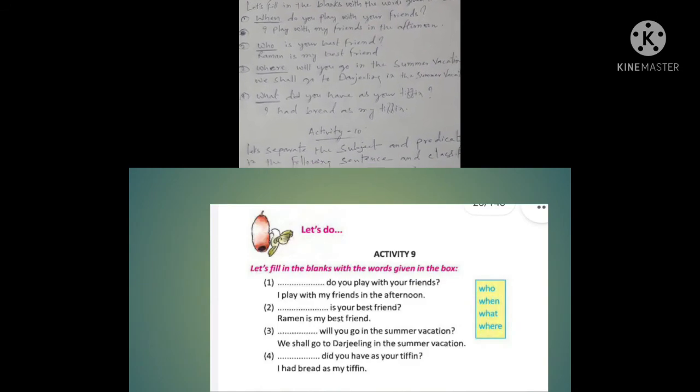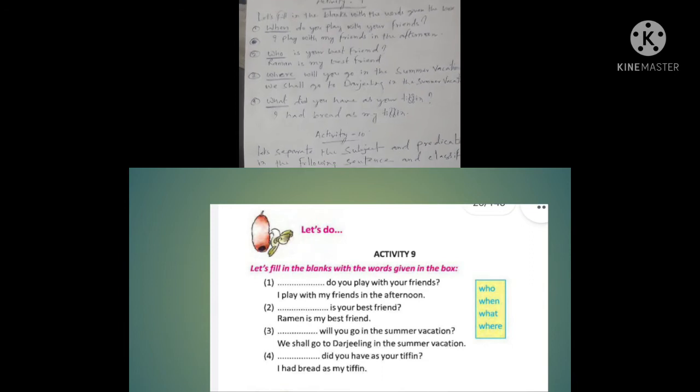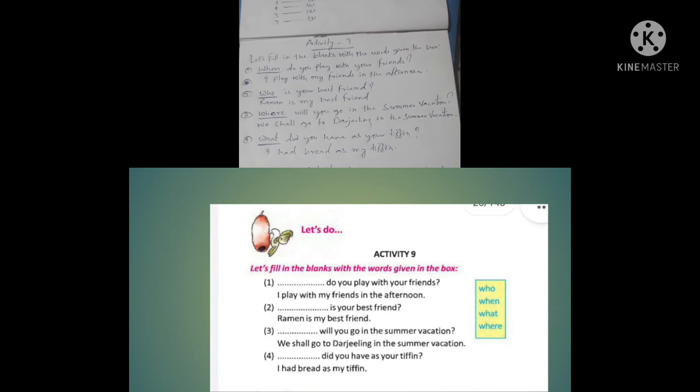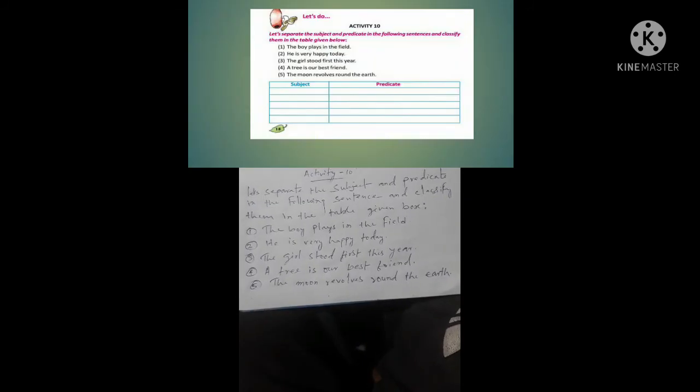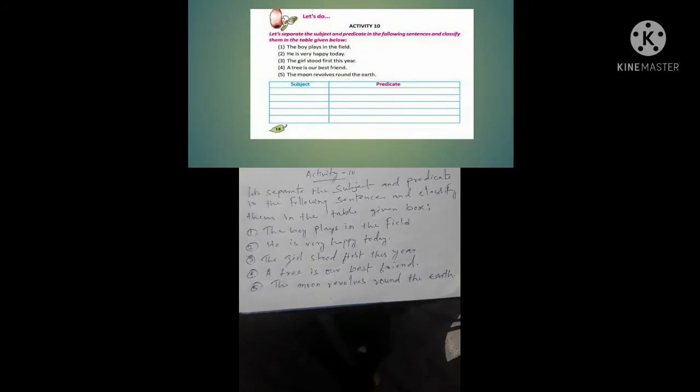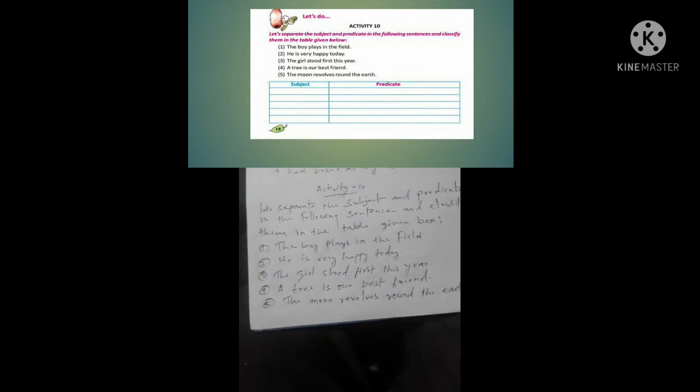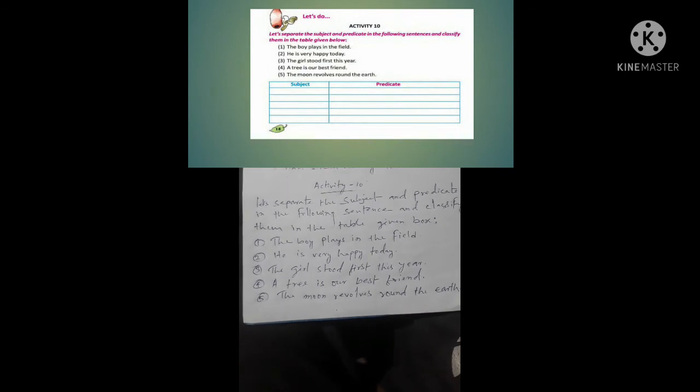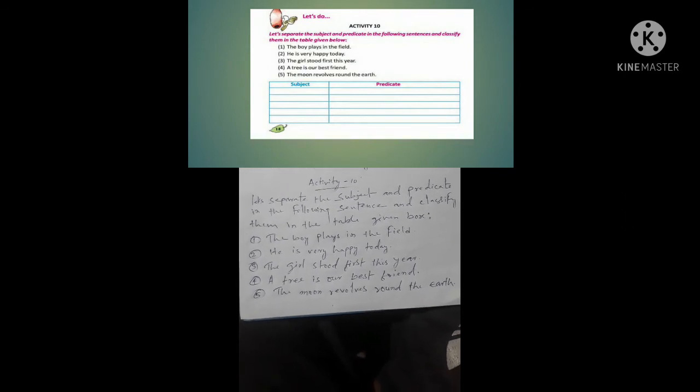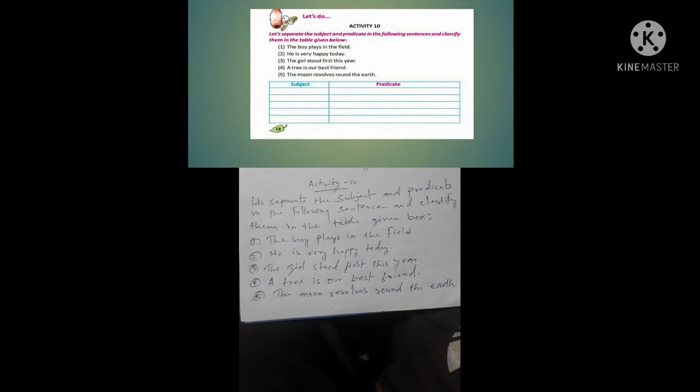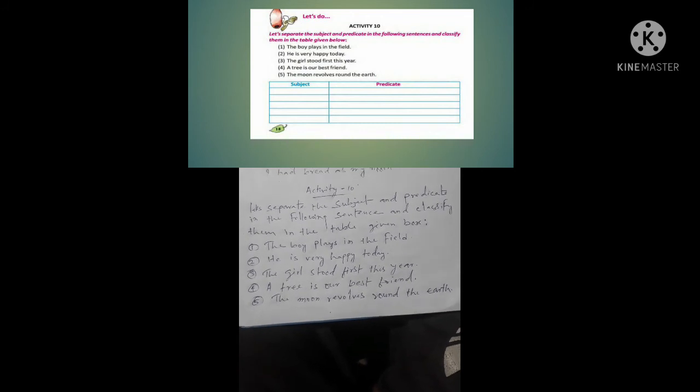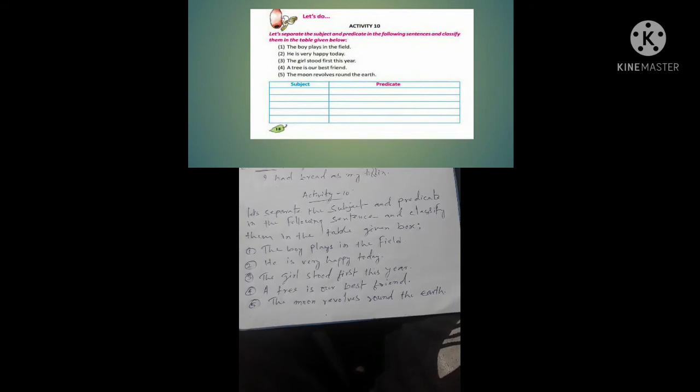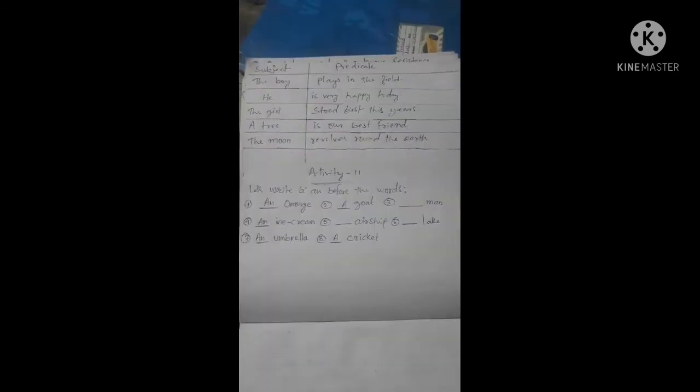Let's separate the subject and predicate in the following sentences and classify them in the table given below. Number 1: The boy plays in the field. Number 2: He is very happy today. Number 3: The girl stood first this year. Number 4: A tree is our best friend. Number 5: The moon revolves around the earth.